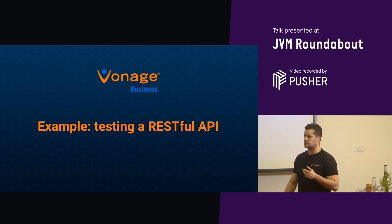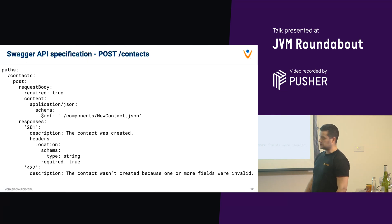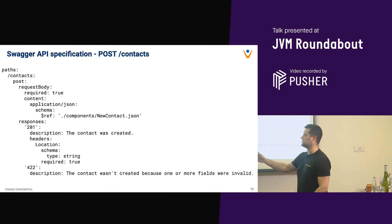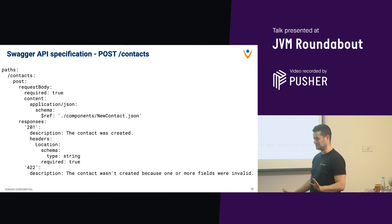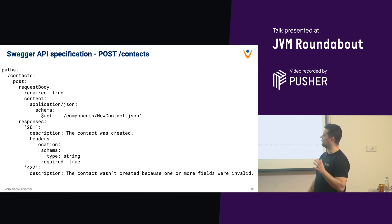Now I'll show how to structure contract tests for a RESTful API using a Spring Boot project, which is quite traditional on the JVM. I'm starting with Swagger, a popular API specification framework that allows you to describe your API - similar to JSON API or GraphQL in that sense. For this demo I've sketched a fake contacts API where you can POST a contact, describing the request body, whether it's required, the content type, and linking it to a NewContact JSON schema.